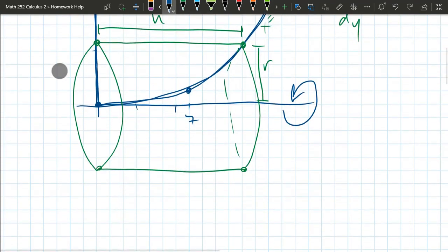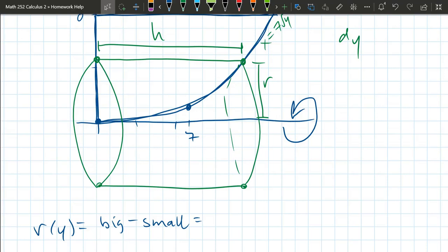It doesn't really matter which one we do first. So we need a function of y. The radius is a function of y. And I'm going to go big minus small. So what's the big? This one's a little tricky. You see the big, but the small right here is zero.